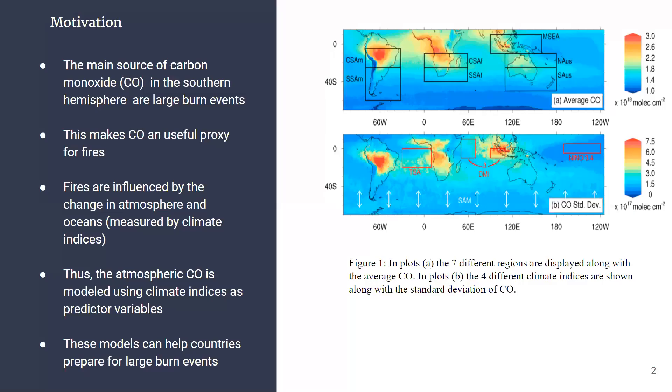The main source of carbon monoxide in the southern hemisphere are large burn events. This makes CO a useful proxy for fires. Fires are influenced by the change in atmosphere and oceans which can be measured by climate indices, which measure the variability in sea surface temperature and winds.